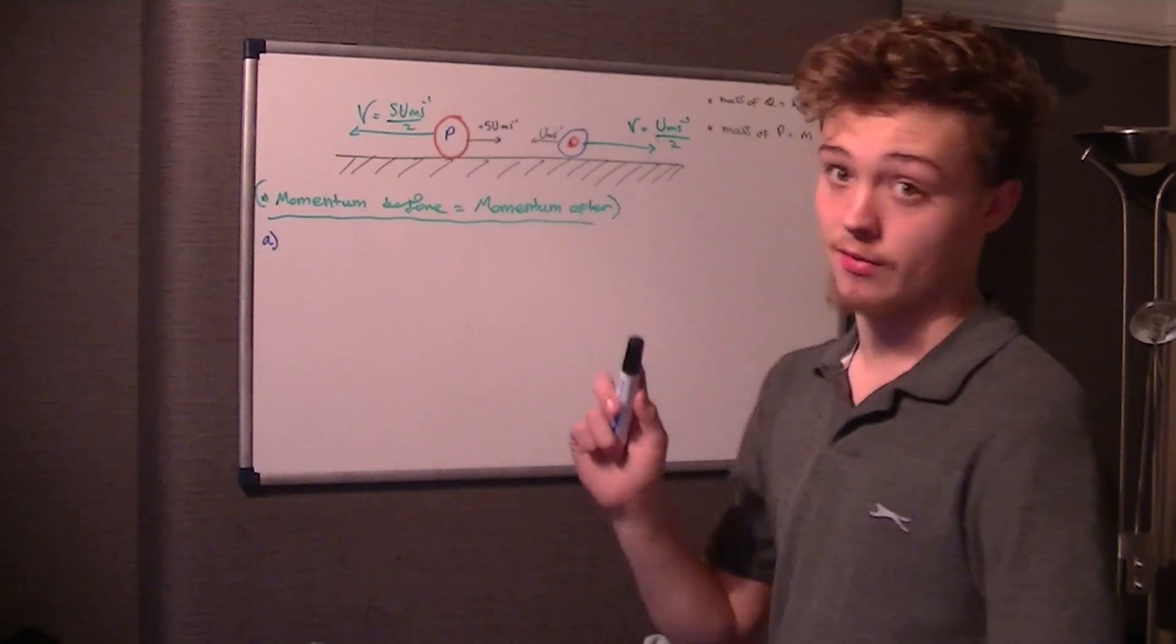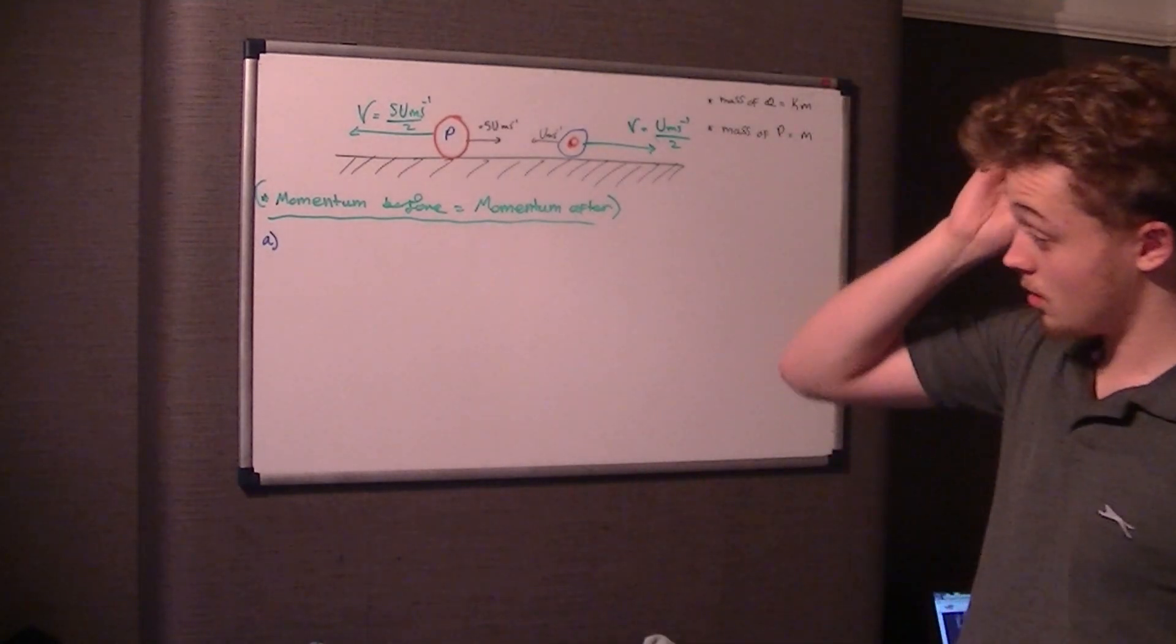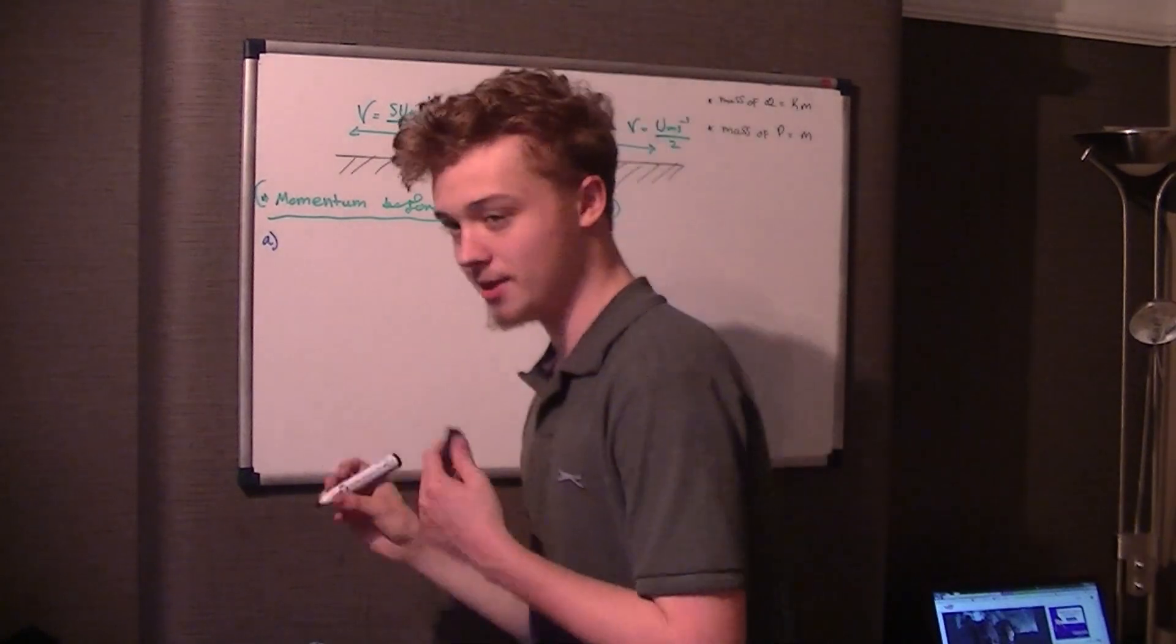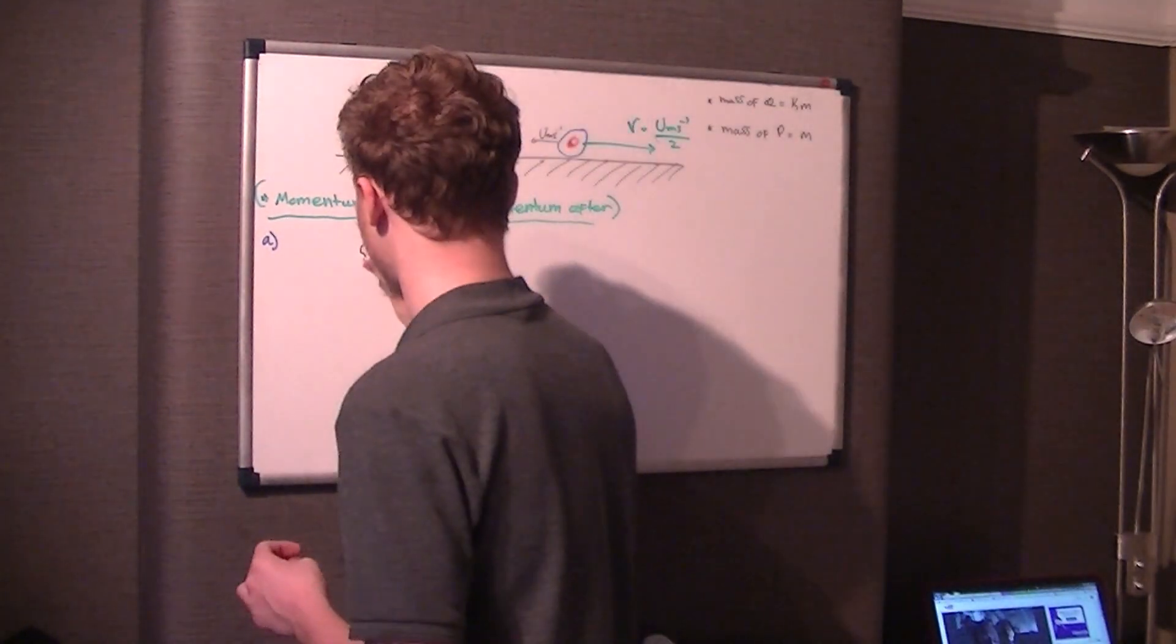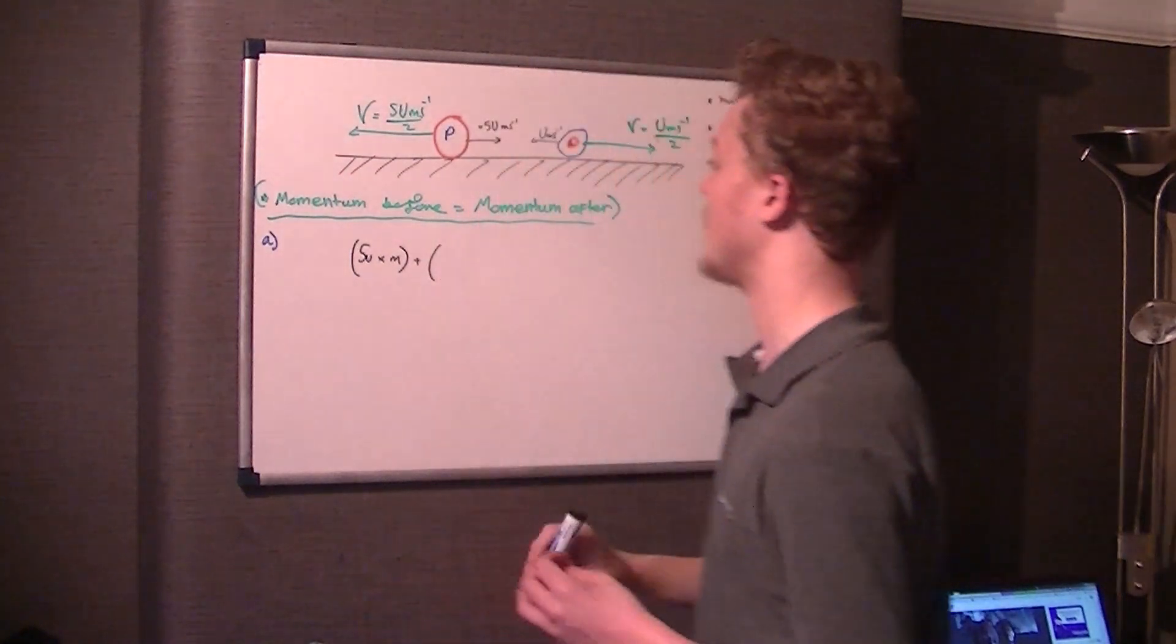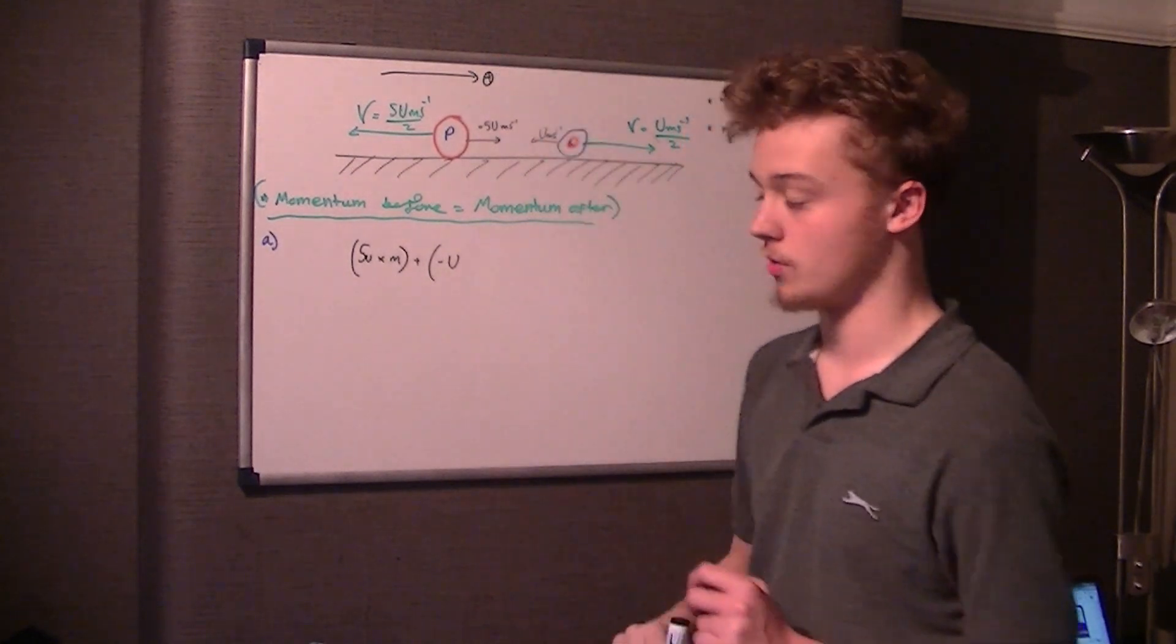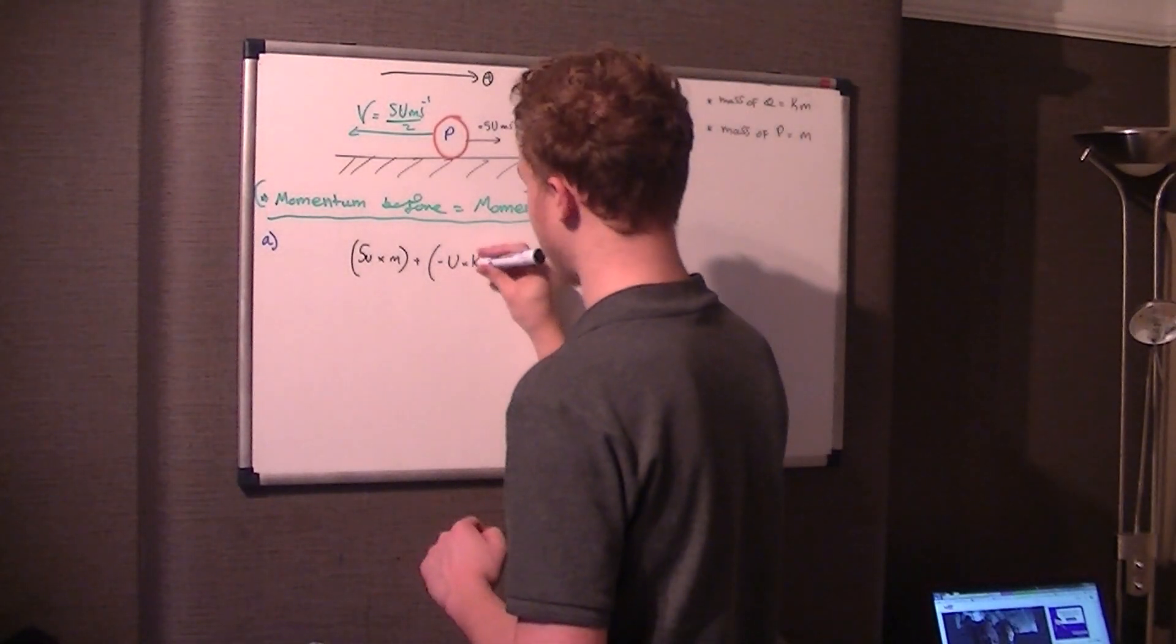So anything that's going right has a positive velocity. Obviously you're not going to have a negative mass. What we're going to do is say initially before, just follow this formula, but instead of putting in our numbers, we're going to put in these letters. So momentum before, we've initially got a speed of particle P at 5U meters per second, times the mass of P which is just M. And we're going to add that to Q, which is traveling at U meters per second. However, this is negative U because we're considering going from left to right as the positive direction. So U meters per second times the mass of Q which is KM.